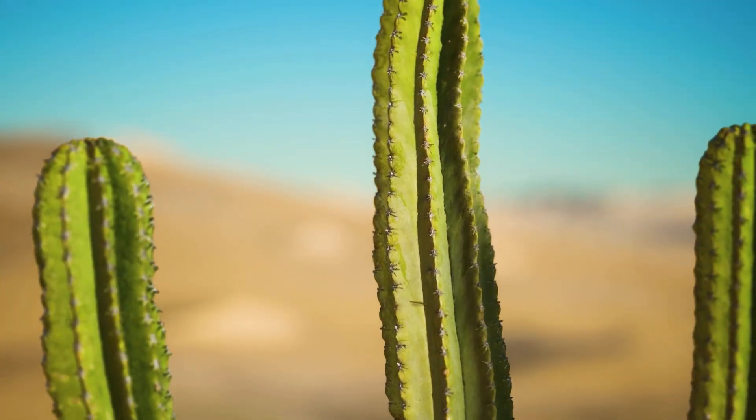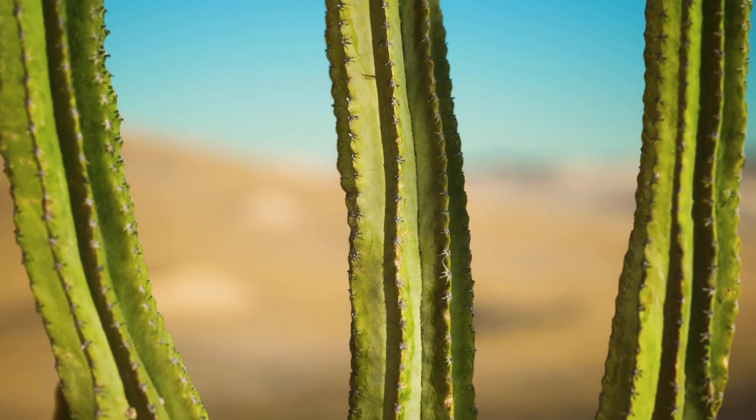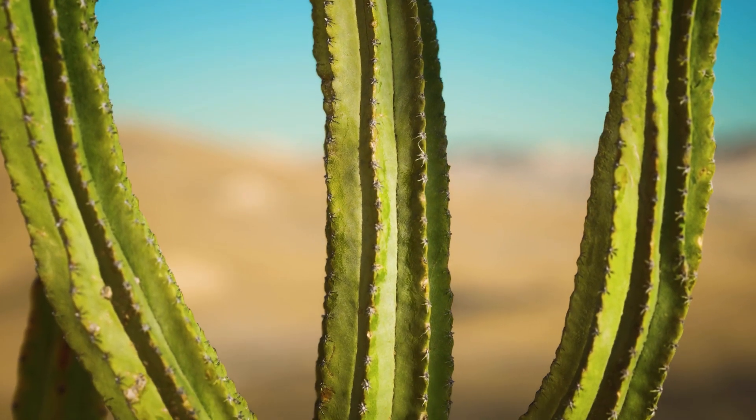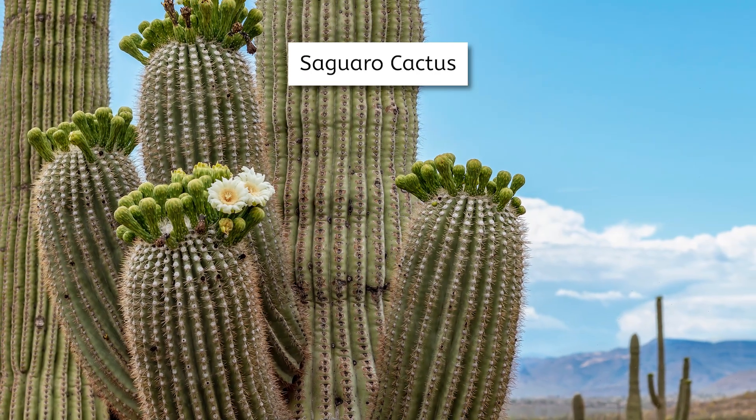Now that we've seen the abiotic factors at work here in the Sonoran Desert of Arizona, let's see what type of biotic factors we can find. I asked Mia to take a tour through the national park this morning and record some of the most interesting life she found. The most obvious plant life here in Saguaro National Park is the very cactus that the park was named after — and Mia's favorite — the giant saguaro cactus!